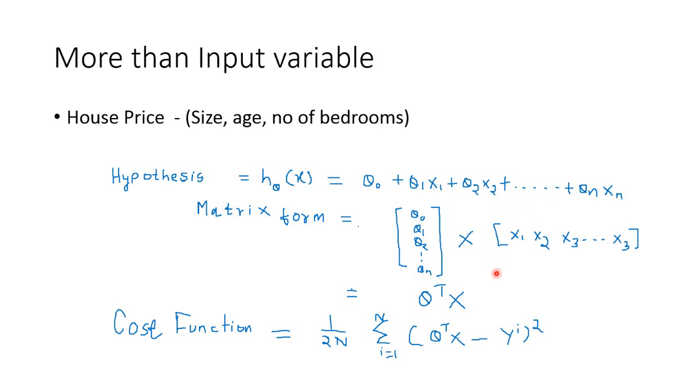So we cannot plot it, of course. But to make it simpler, we can use it in the matrix form. So the hypothesis can be represented like this. We have one matrix, one column matrix with one column and n rows. So it's a one cross n matrix from theta 0 to theta n.